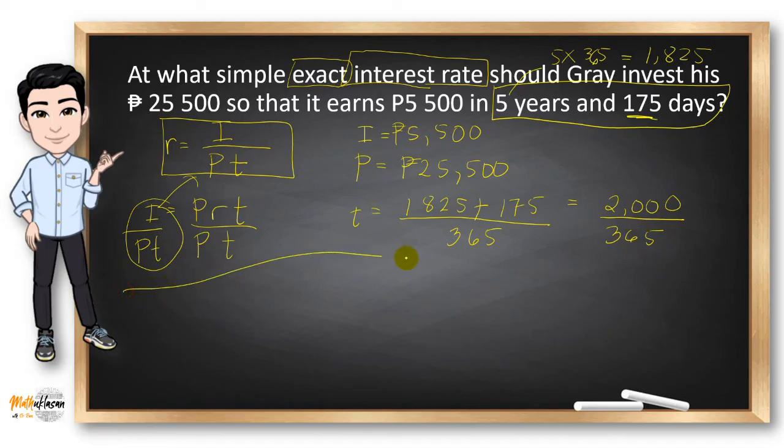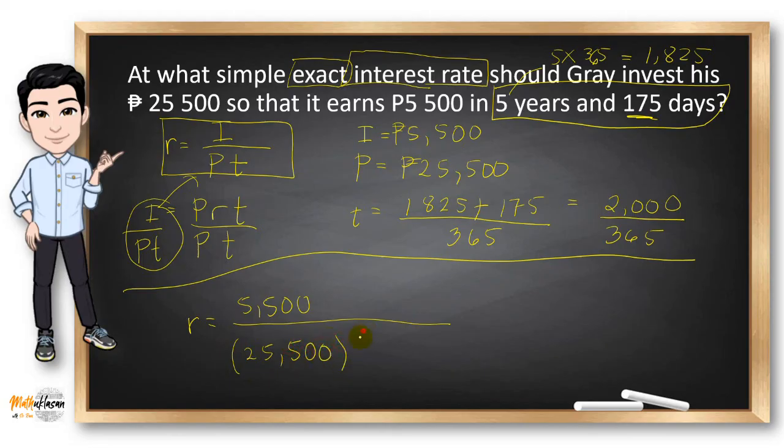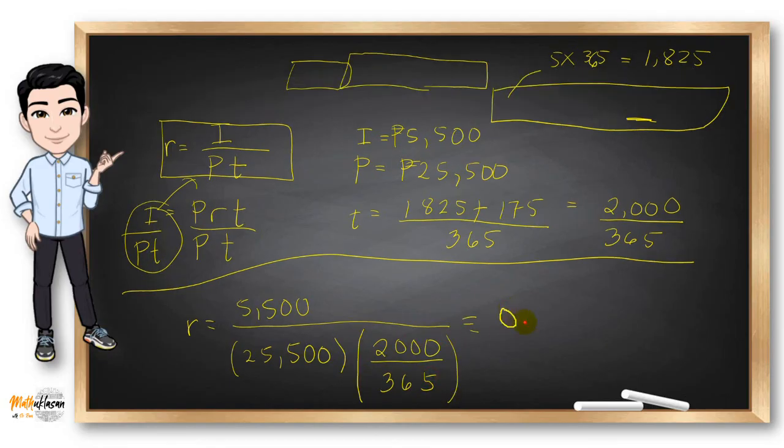And we can now start solving for the rate. Rate is equal to P5,500, which is the interest, divided by principal, which is 25,500, multiplied to time, which is 2,000 divided by 365. And this will give us a decimal value of 0.0394. Multiply it to 100, we'll have 3.94%.